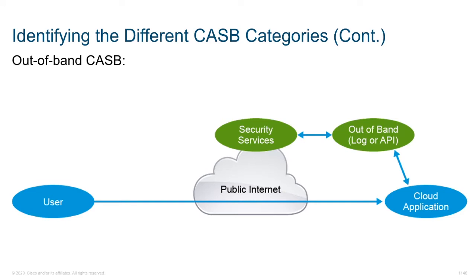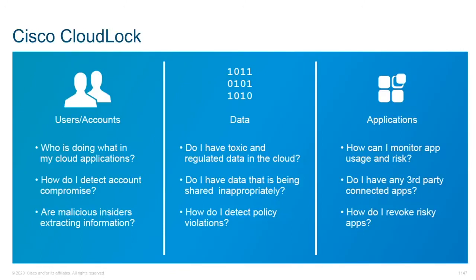Out-of-band CASB solutions are outside of the user's cloud apps, and there are two main flavors: API calls that can be exchanged, or log data that can be exchanged. Sometimes that log data is a little bit slower, and it may require a SIEM. Generally, the APIs are going to allow the CASB solution to directly control the cloud applications.